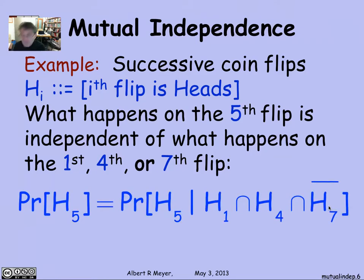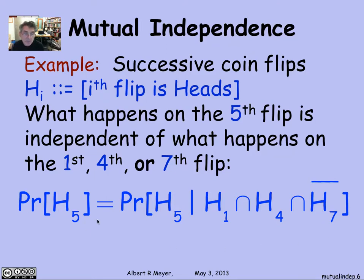So what that means, for example, is that the probability of a head on the fifth toss is equal to the probability of a head on the fifth toss, given that the first toss was a head and the fourth toss was a head, and the seventh toss was not a head — the complement of H7. That's just one example of the many conditional equations that hold when you have mutual independence.